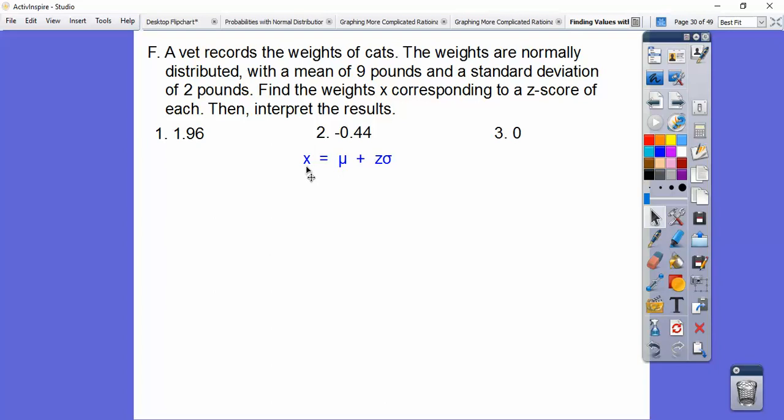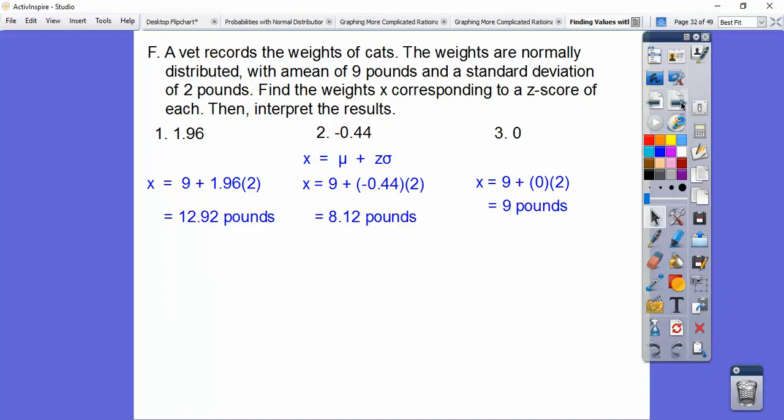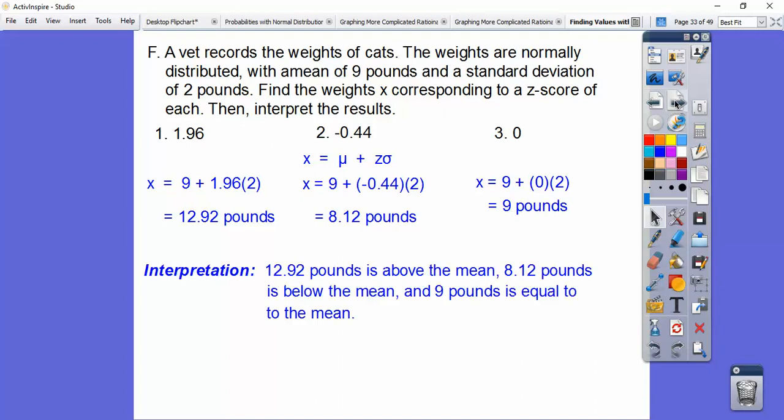So that's going to give us, here's our formula. So we're looking for x. So we're going to plug in our mean of 9, our z-scores, which are these numbers right here, and then times the standard deviation of 2 pounds. Did that on all of them right there. And then we just crank it all out, and then we're going to interpret these results. So what does this mean? Well, if the mean is 9 pounds, this one is over the mean. This one is under the mean. This one is exactly the mean. So you're always going to interpret that. That's the interpretation.